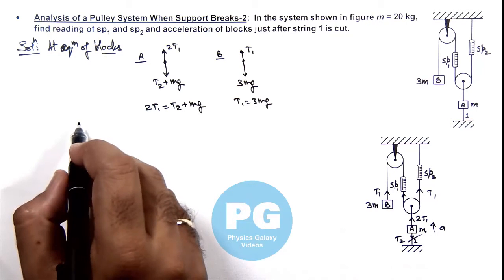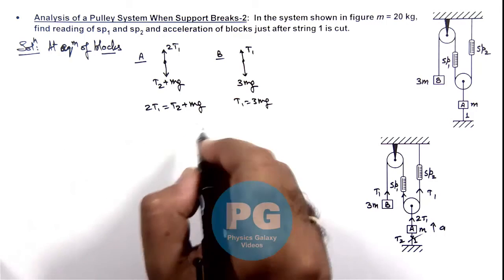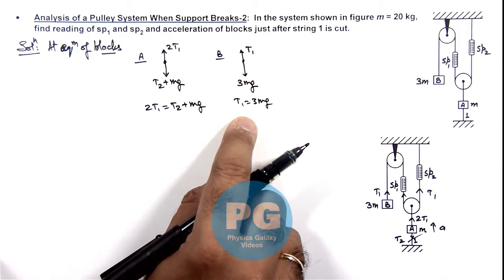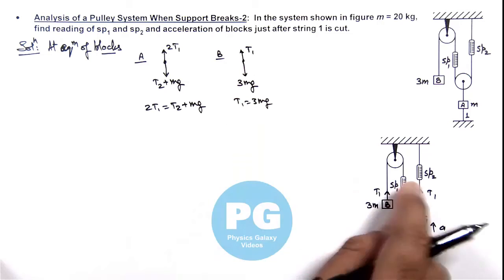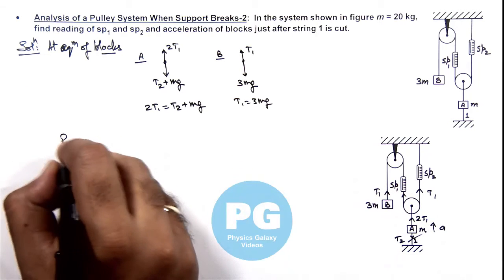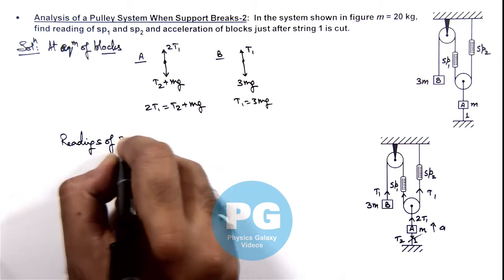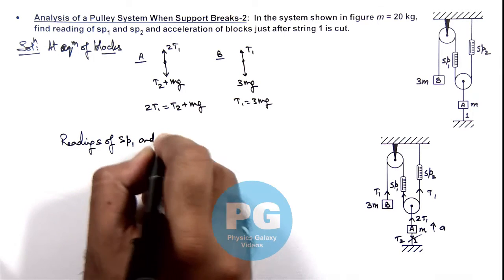So just after cut the value of spring balance reading will remain same. So here we can calculate the value of T1. As the value of T1 is 3mg, we can simply write the reading of SP1 and SP2.